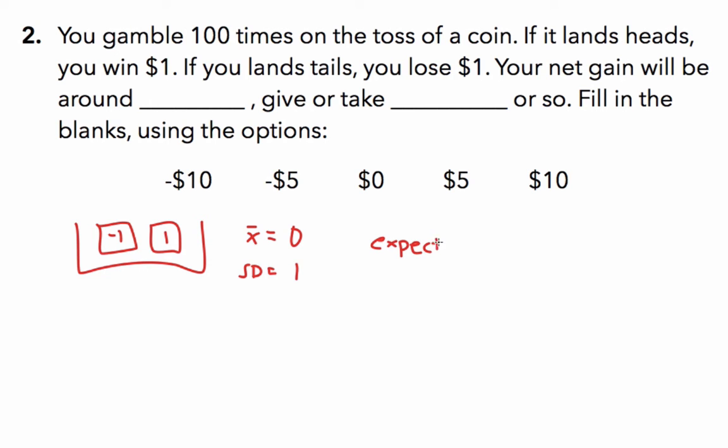Our net gain is the expected sum, which is going to be 100 flips of the coin times the mean of 0. So we would expect to break even on average because 100 times 0 is 0.